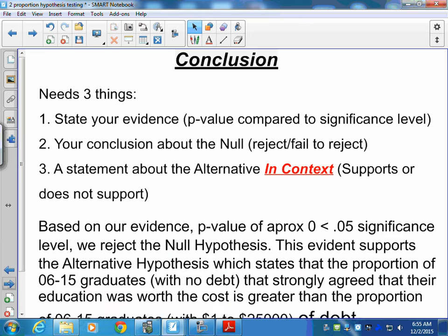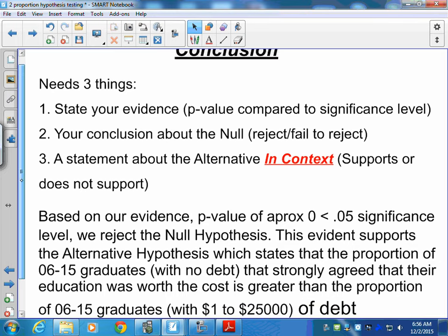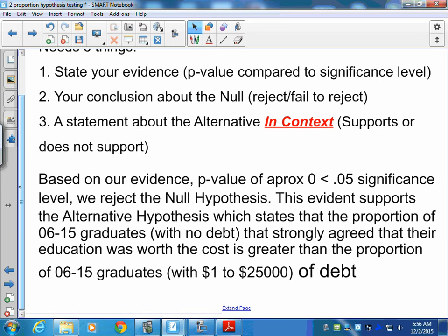After we go through our calculations, the very last thing that we have to do is write our conclusion statement. Remember the three things that you need, and then we build that conclusion based on our evidence. P-value of approximately zero, less than our significance level, we reject the null hypothesis. You don't need context here in this situation, you just have to have context somewhere in the problem. And it's usually easier to put it in your alternative support statement.